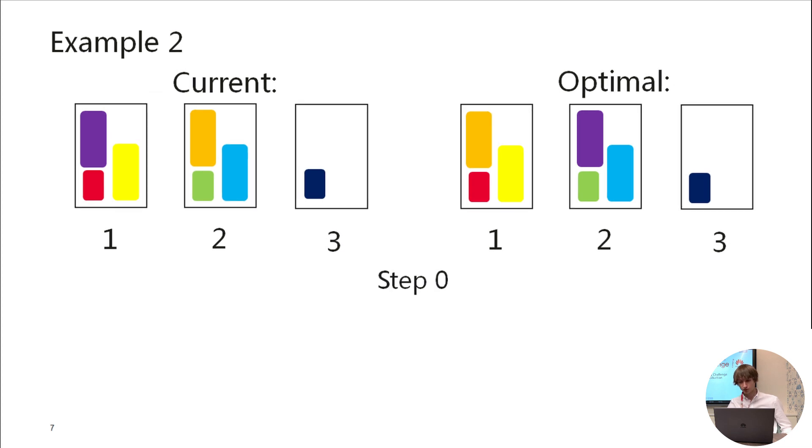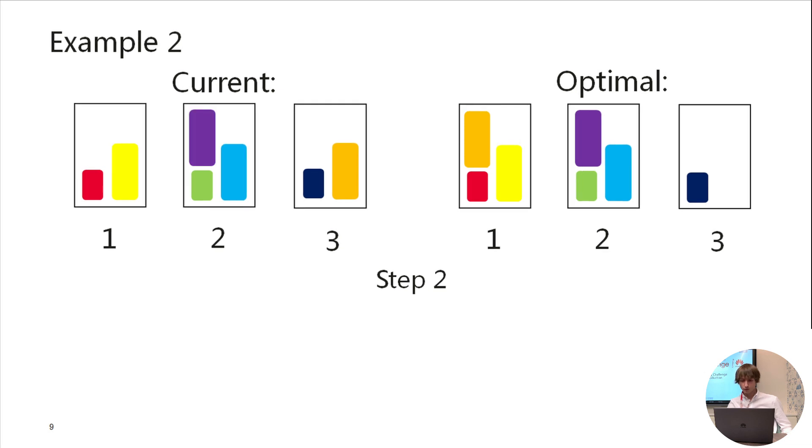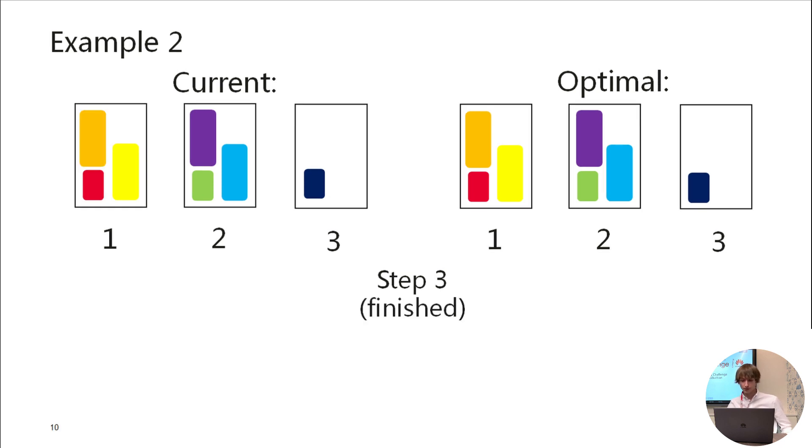Step 0, initial step. Step 1. We moved orange virtual machine from server number 2 to server number 3. Step 2. We moved purple virtual machine from server number 1 to the final destination, server number 2. And now we only have to move orange virtual machine from server number 3 to server number 1. Okay, we achieved the final mapping, doing three migrations and in three steps.